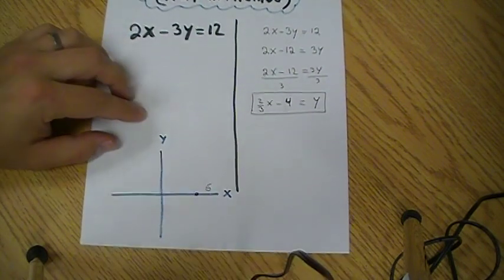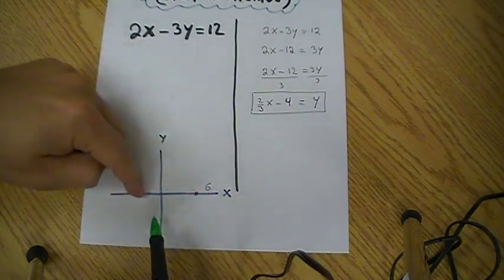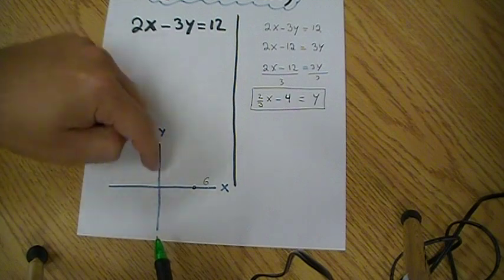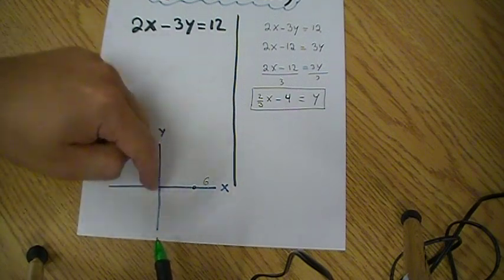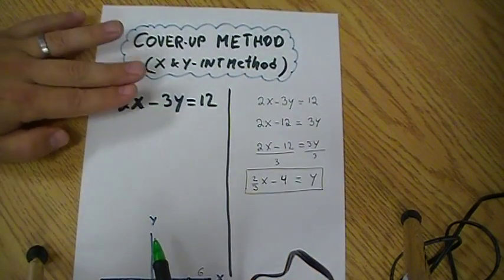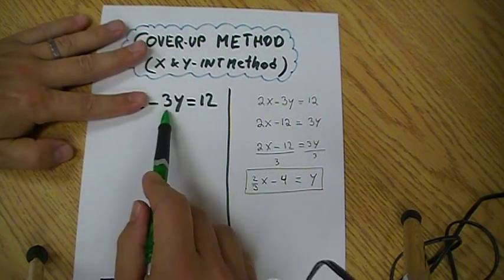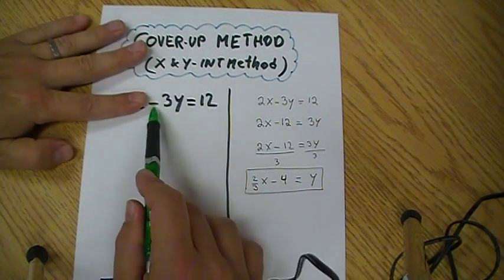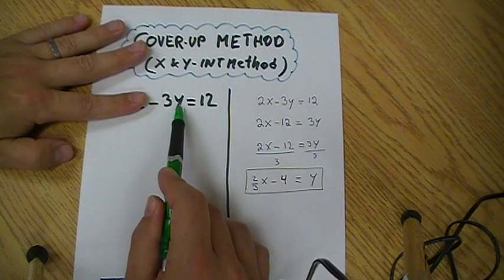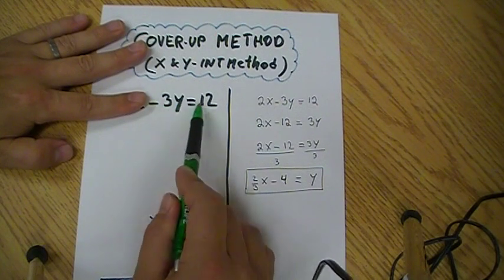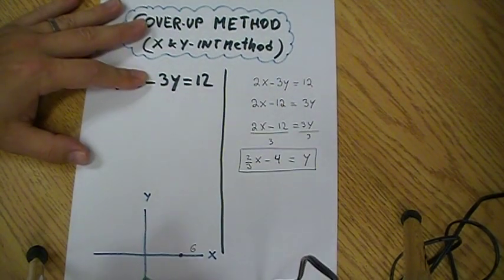And on the y-intercept, I know that the x is going to be 0. So wherever the line crosses the y-axis, the x will be 0. And if the x is 0, I'm just going to cover this up, and it's minus 3y is equal to 12. So I know that y has to be negative 4, so that negative 3 times negative 4 gives me 12. So negative 4 is going to be over here.